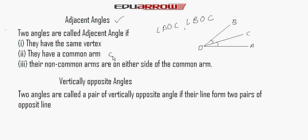Now we read about vertically opposite angles. Two angles are called a pair of vertically opposite angles if their lines form two pairs of opposite sides. An example is shown in the figure.